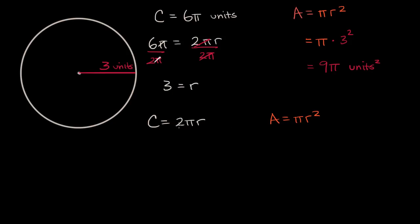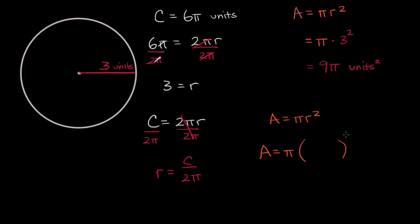Pause the video and see if you can do that. All right, so let's do it. Let's solve for r. If we divide both sides by two pi — this is exactly what we did up here — what are we left with? We're left with r is equal to c, the circumference divided by two pi. The radius is equal to the circumference over two pi. And so when we're figuring out the area, area is equal to pi times radius squared, but we know that our radius could be written as circumference divided by two pi. We want to relate between area and circumference.